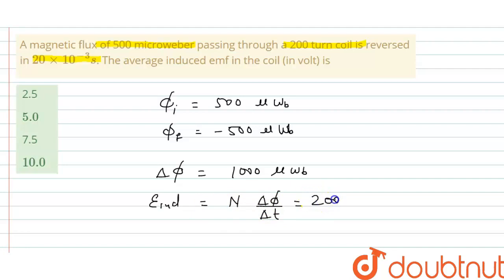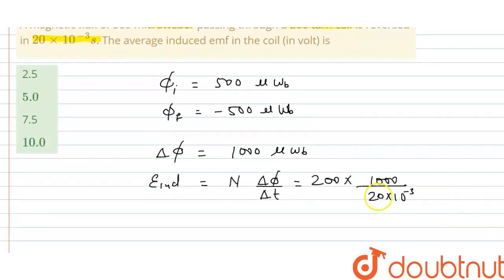So n is given 200 into change in magnetic flux is 1000 divided by time taken is 20 into 10 to the power minus 3. So from here we can write this as 20 times 10 times.